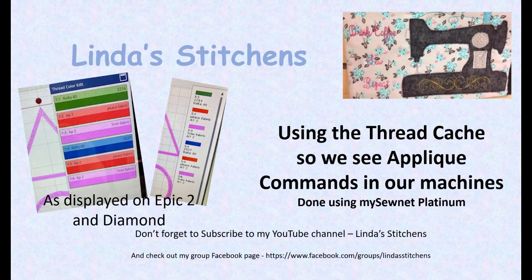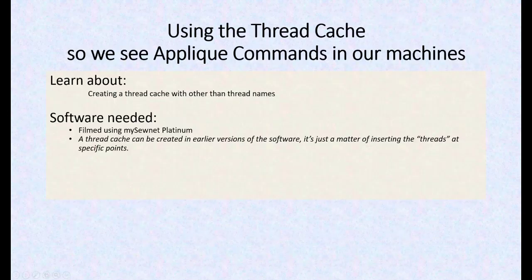What we're going to do is create a dummy thread cache that's going to allow us to insert color changes that's going to tell us what to do and where. We're going to do that in the MisoNet Platinum software. It can be done in the older versions of the software too — you just have to learn how to do that.